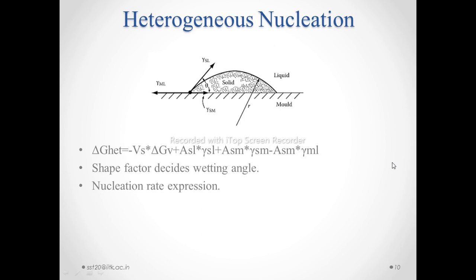This type of nucleation is very common in our solidification, and the nucleation will take place at the preferential sites such as the wall of the container, grain boundaries, etc. Hence, the study of the heterogeneous nucleation rate is very important.